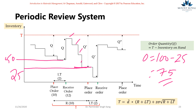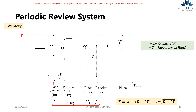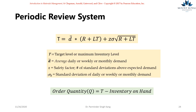The next question is: what if we have demand fluctuations? That's where safety stock comes into play. The value of Z based on your desired service level determines how much safety stock to keep, guarding against unforeseen circumstances for both the review period and the lead time period. Based on this explanation, here's the formula covered earlier.